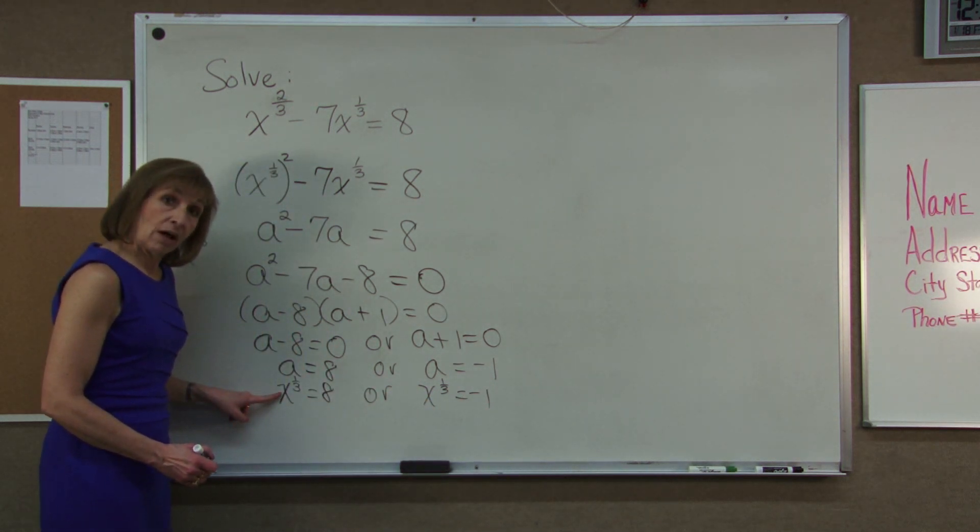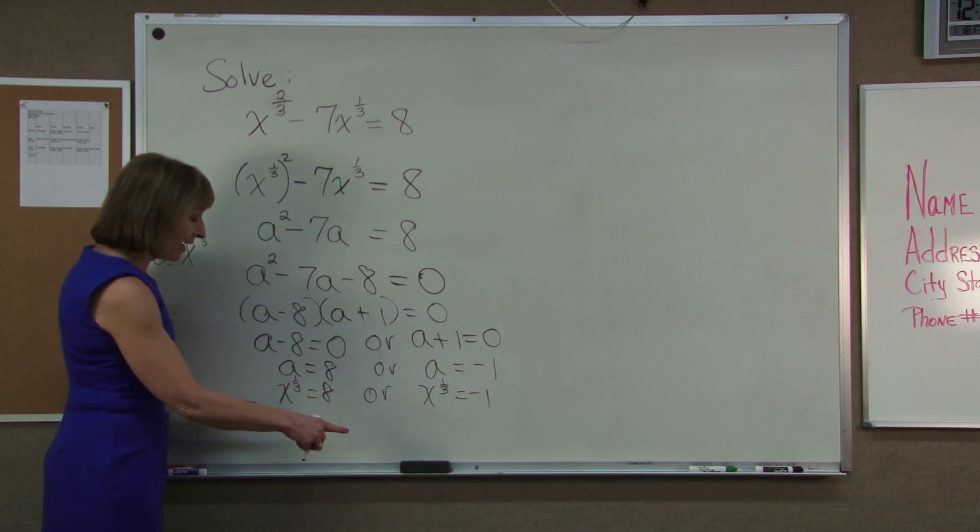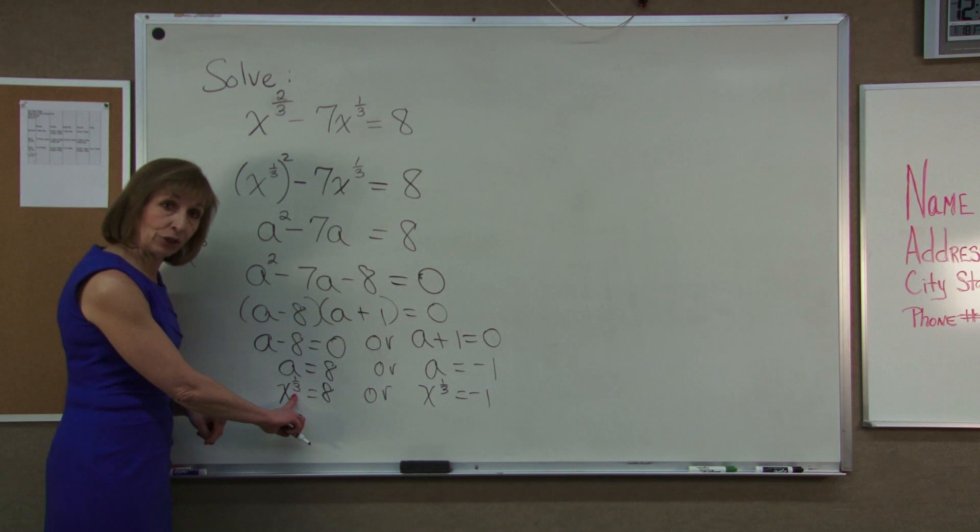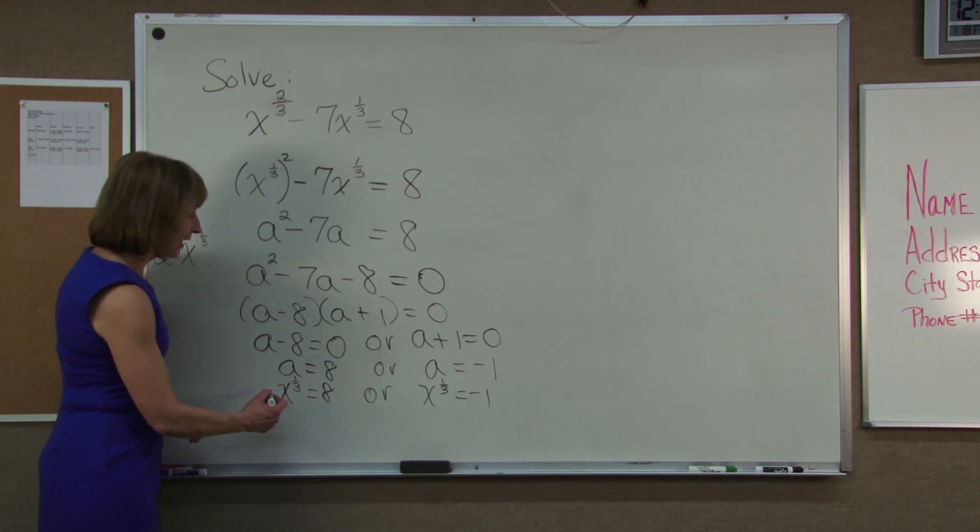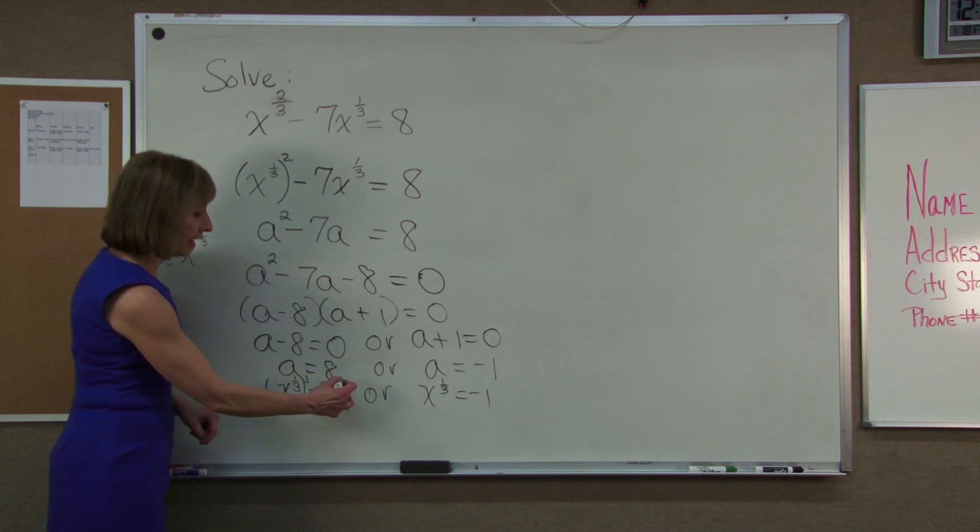We really want to go all the way and find out what our x value is. And so remembering that x to the 1 third is the same as the cubed root of x. I have taking both sides to the third power to undo that cubed root.